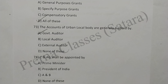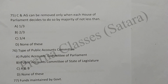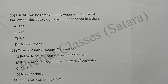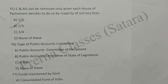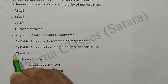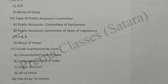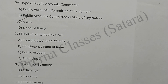Question 74: C&AG shall be appointed by the President of India. Option B is correct. Question 75: C&AG can be removed only when each house of the Parliament decides to do so by a majority of not less than two-thirds. Option B is correct. Question 76: Types of Public Accounts Committees are Public Accounts Committee of Parliament and Public Accounts Committee of State Legislature — A and B both. Option C is correct. Question 77: Funds maintained by government are Consolidated Fund, Contingency Fund of India, and Public Account — all of these. Option D is correct.